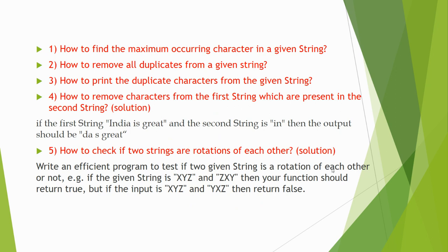The second question is: how to remove all duplicates from a given string. In the previous question you found the maximum occurrence, and the second one is about removing those occurrences — these are interrelated questions. If you are able to solve one, you will be able to solve both. The third question is: how to print the duplicate characters from a given string. The meaning of both maximum occurrence and duplicate characters questions is essentially the same, but interviewers may phrase it differently.